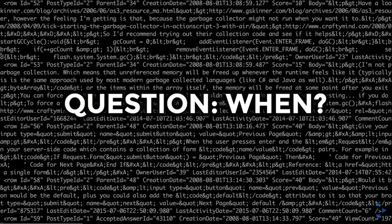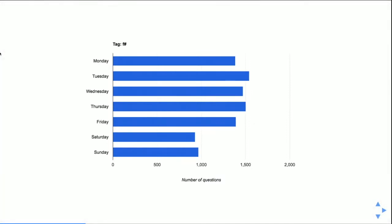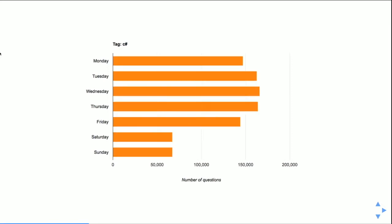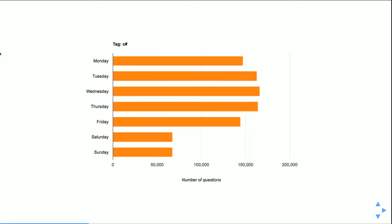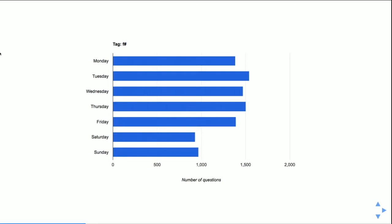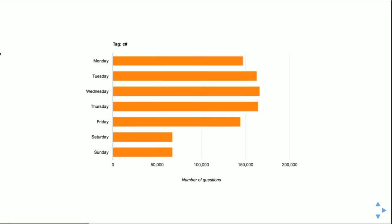When I ran it, for F# I first looked at when people ask F# questions. It's mostly Monday to Friday, dropping over the weekend — which makes sense because people use F# at work. For C#, it's very similar. But I noticed the ratio between weekend and weekday is different: people ask relatively more F# questions over the weekend than C# questions. I also noticed people ask fewer questions on Monday and Friday than other weekdays.